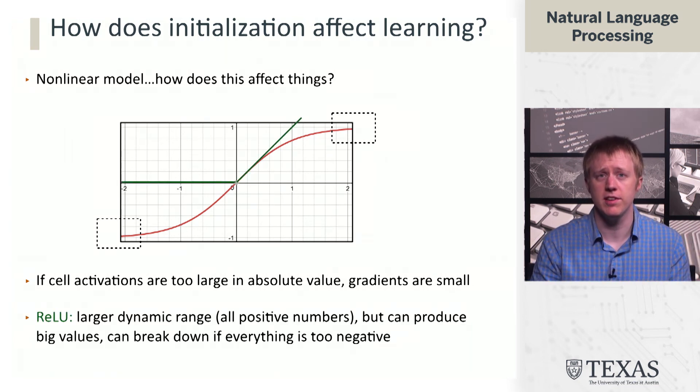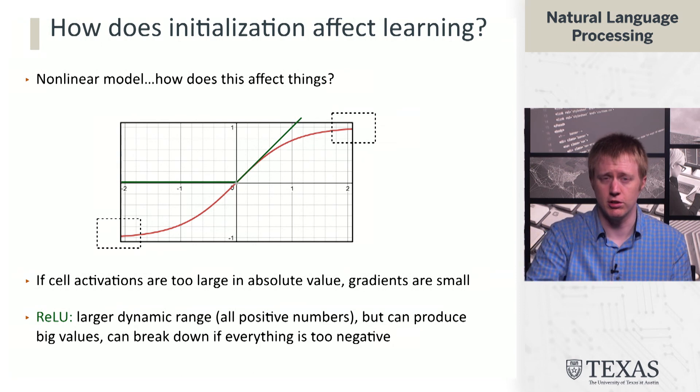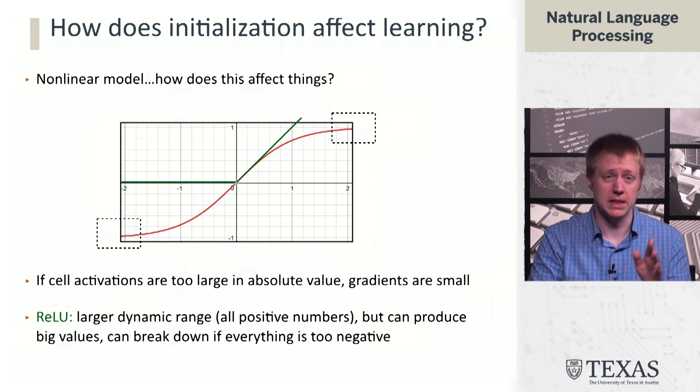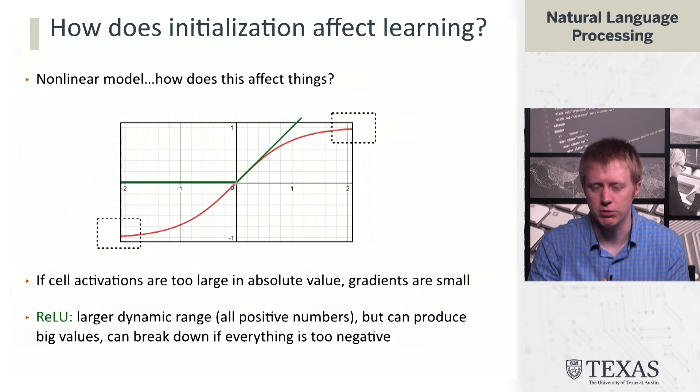This is one reason to consider using rectified linear units or ReLUs, these hinge-shaped things in green here. These can produce larger values, but they have a similar sort of problem, which is that if everything ends up being negative somehow, you can also get a little bit stuck. So you have to think about the right way to initialize in order to avoid these things happening.